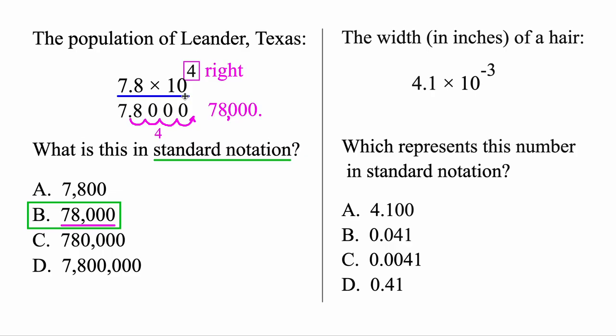Okay, let's look at another one. Once again, we're writing this number here in standard notation. But this time we have a negative exponent. Because it's negative, we're going to move this decimal here to the left this time. Okay, let's copy over 4.1 to start. You'll always copy over the first part.